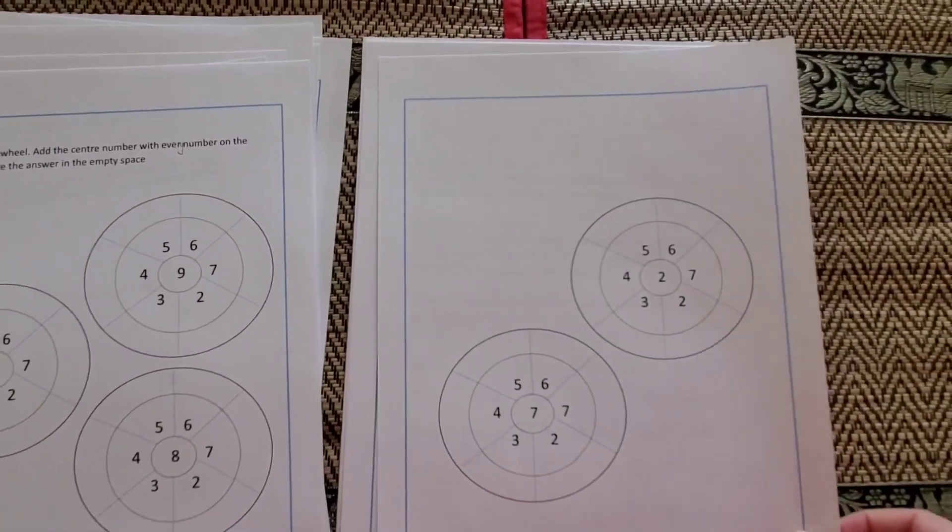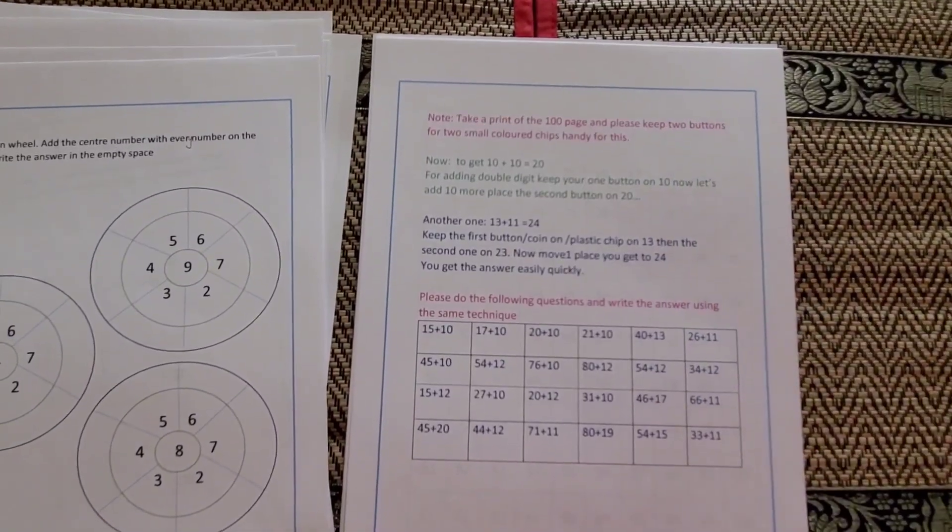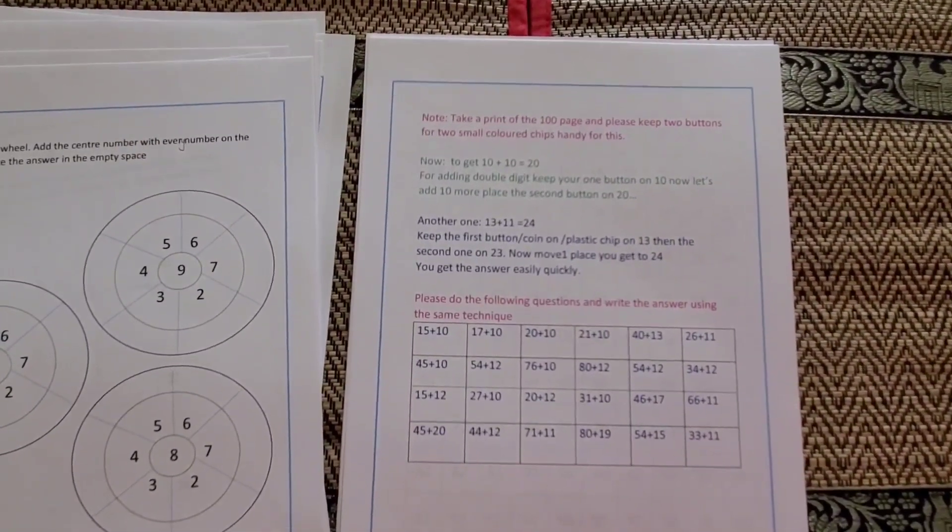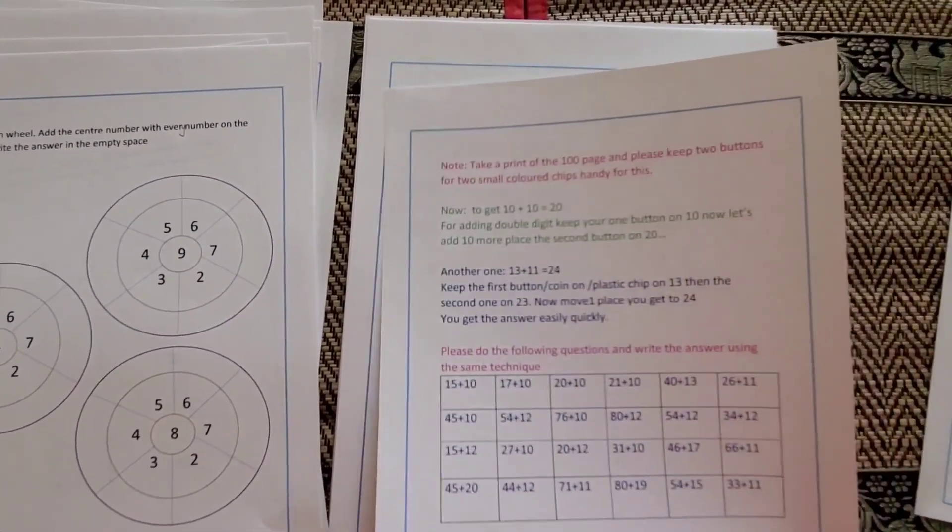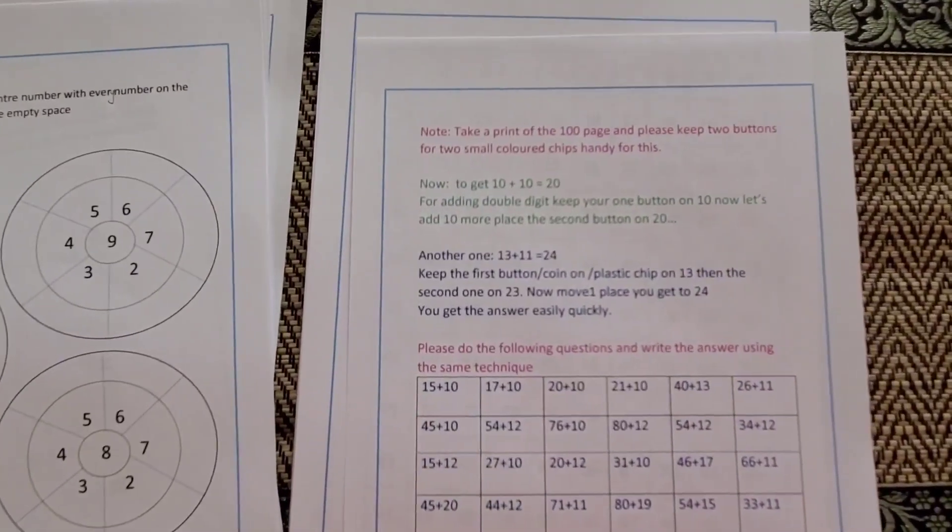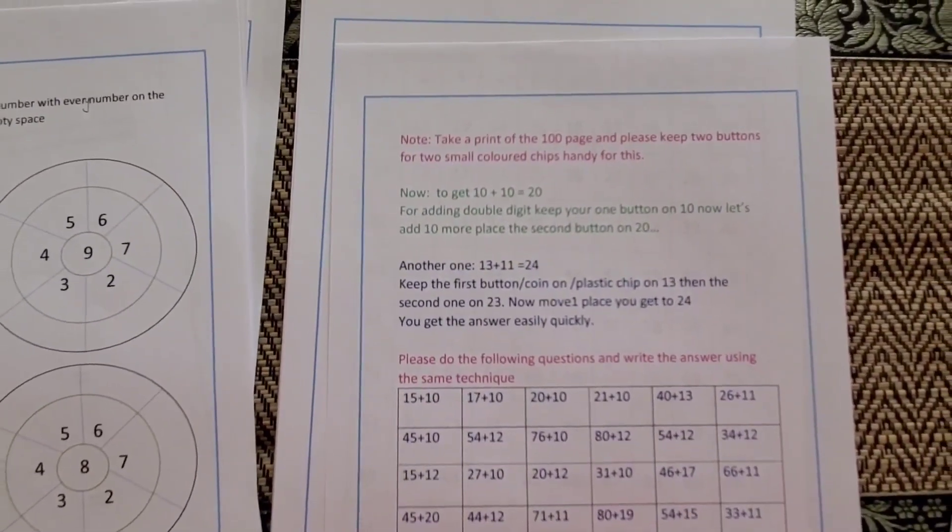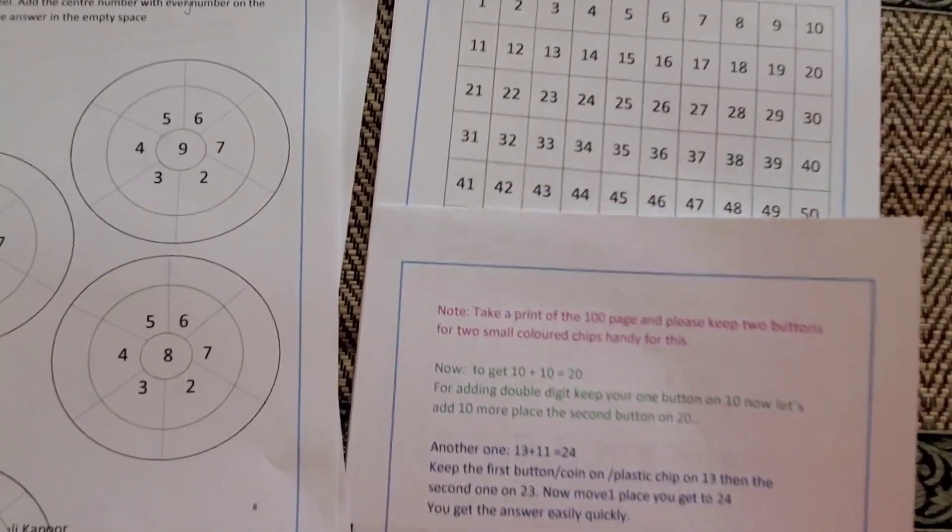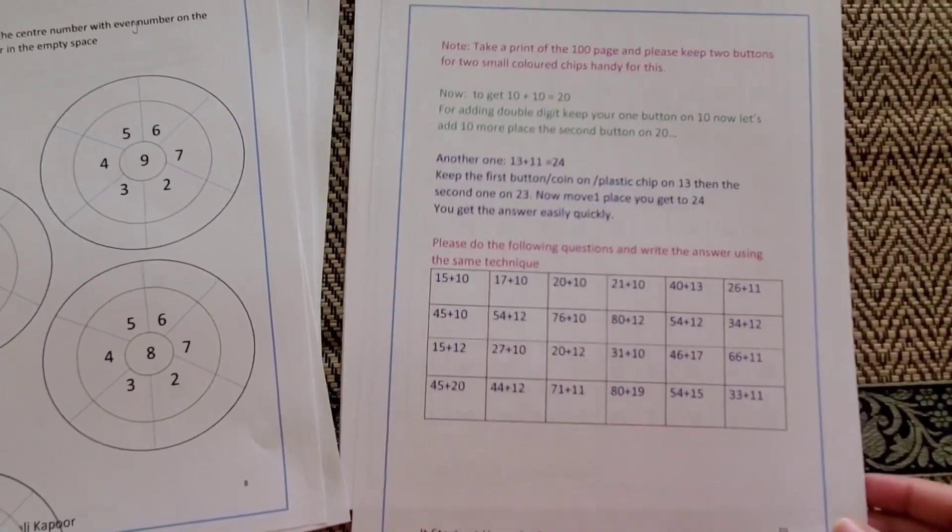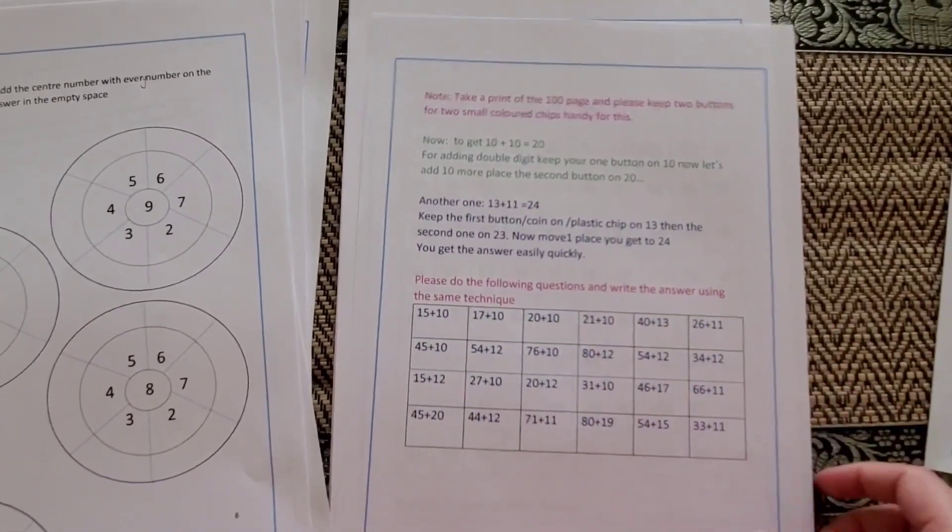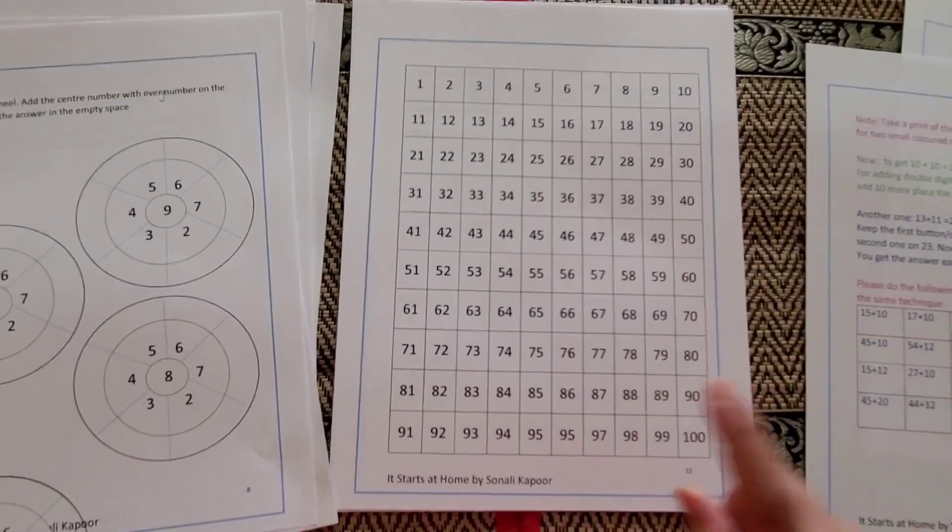Then you have a double digit addition strategy with hundred board, and that's right here. I'm gonna show you the hundred board is right here. You have to take a print of these and please keep two buttons or two color chips handy. Now get to - so I'm explaining it to you how to do it - like first get to 10, then 20. And these are some of the equations that I've told you to try and attempt while using this hundred board.